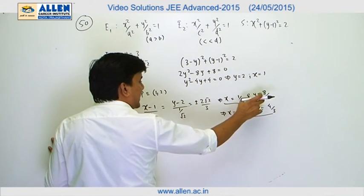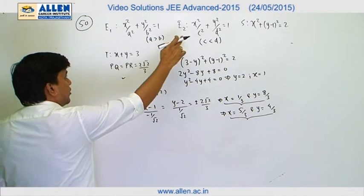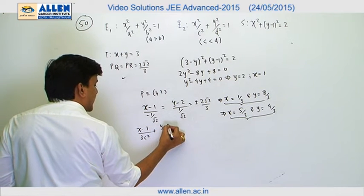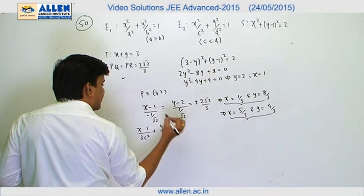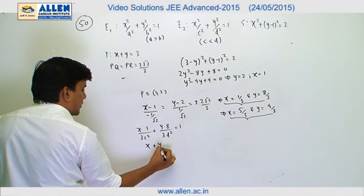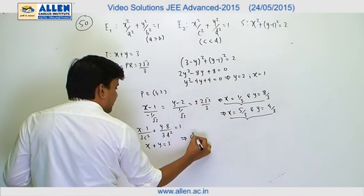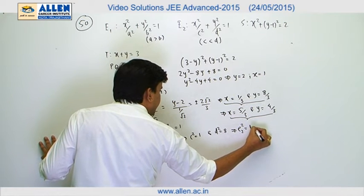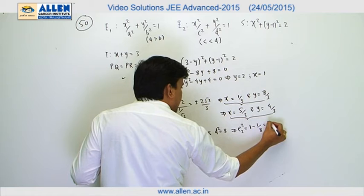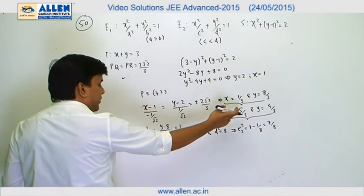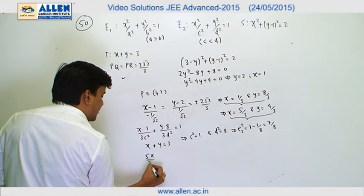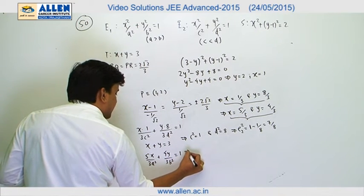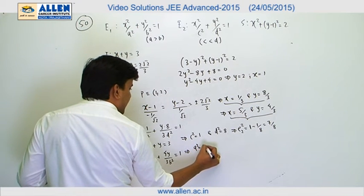Writing the equation of the tangent at (1/3, 8/3) on ellipse e2: by comparison we get c² equals 1 and d² equals 8. For ellipse e1, the tangent at (5/3, 4/3) gives: 5x upon 3a² plus 4y upon 3b² equals 1, which gives a² equals 5 and b² equals 4.